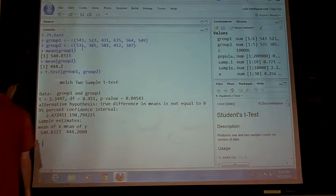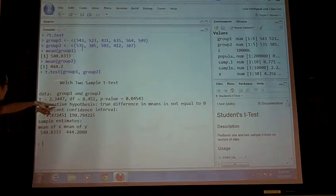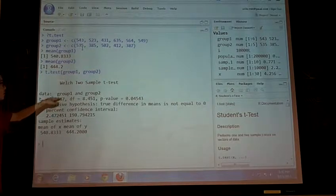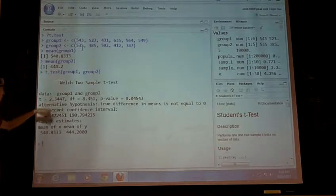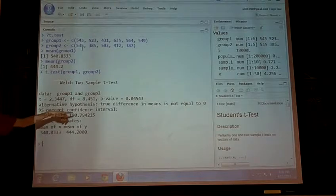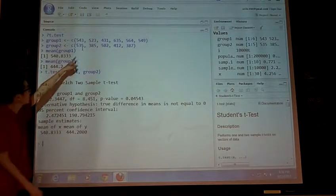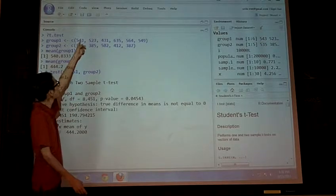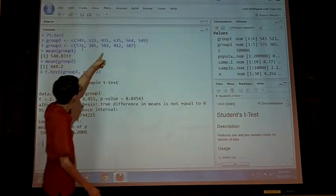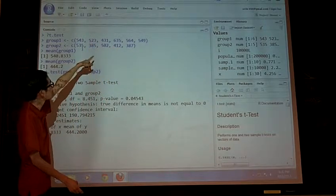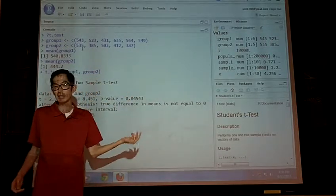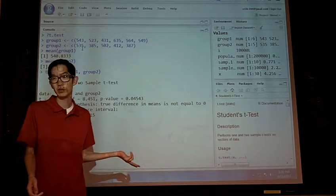And so here, you'll notice it calculates a test statistic. If you did this yourself, you would get the same test statistic. And here, how many degrees of freedom would we count? We would see 1, 2, 3, we would see 1, 2, 3, 4, 5, 6 in group 1 and 5 in group 2. We would have said, 6 plus 5 is 11, minus 2 gives me 9 degrees of freedom.